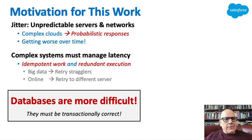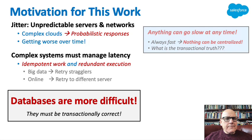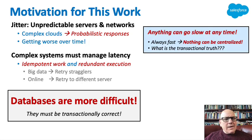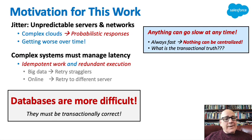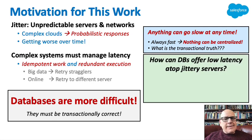But databases are more difficult. They must be transactionally correct — you've got to get the perfect answer. But anything can go slow at any time. If it's always fast, nothing can be centralized, because if that centralized thing goes slow, you're in a real pickle. What is the transactional truth?